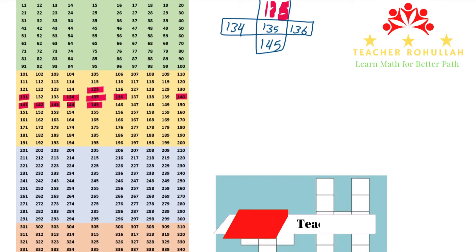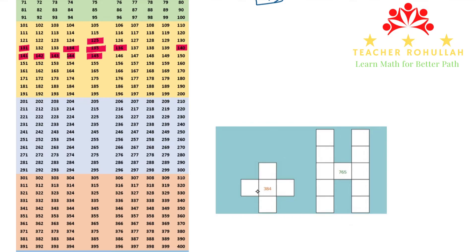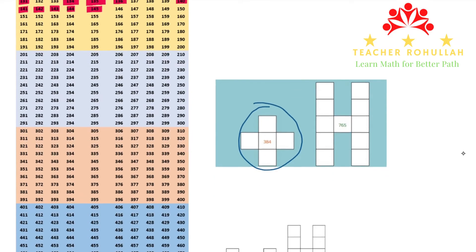We have another problem over here, which is taken from the Cambridge Primary Mathematics Learners Book 3, and we will solve the problem related to this question. We have 384 in the center, and in the number strip we have to look for 384. So let's find 384.